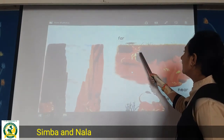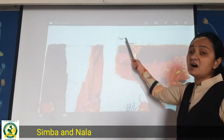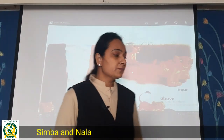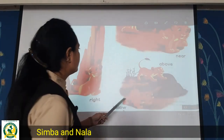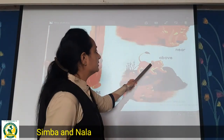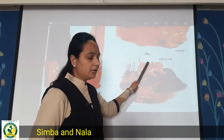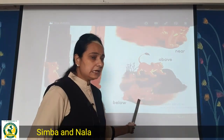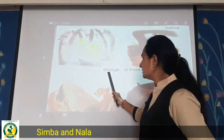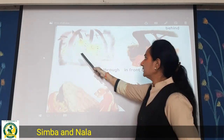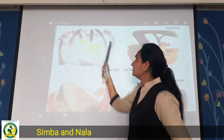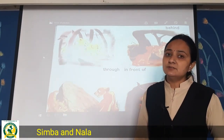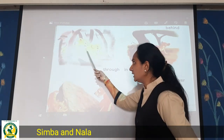You can see here: Simba is far and Nala is near. Far, near. Then you can see above and below — Simba is above, up, and Nala is below, down. Above, below. And through — they are passing through the trees, passing through the trunk of the trees.